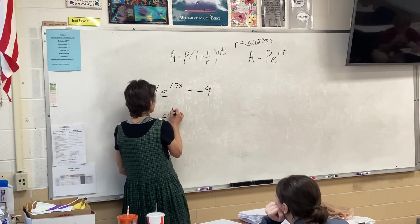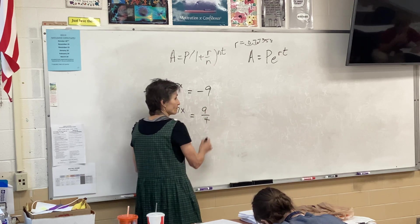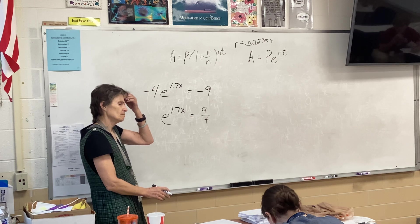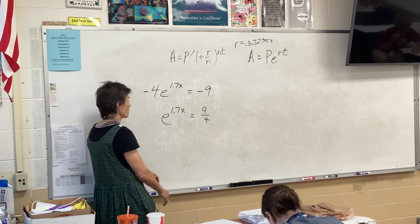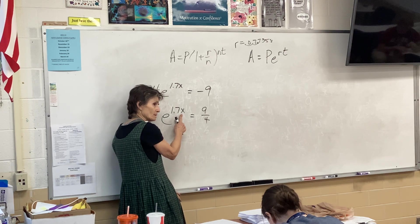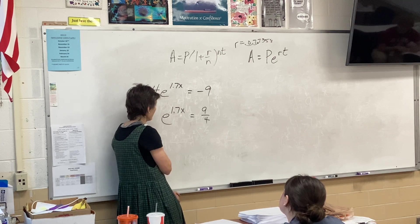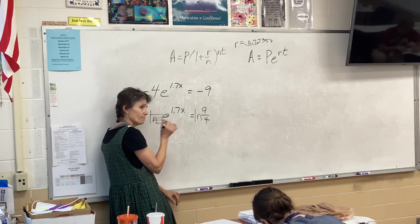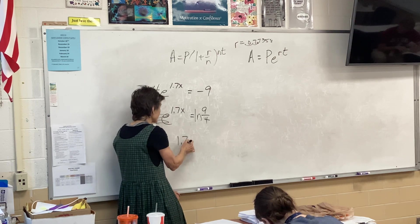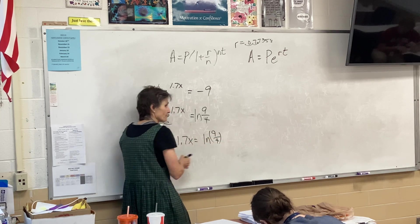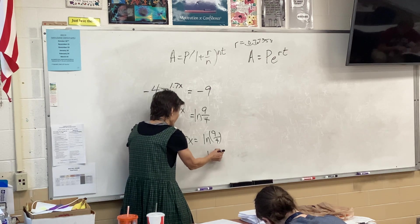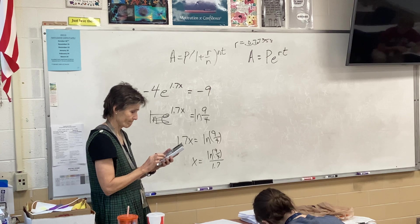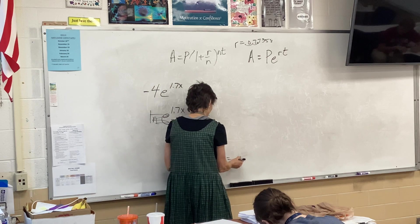Divide by negative 4. So e to the 1.7x ends up equaling 9 fourths. Now remember, this is a calculator problem, so I really don't care about fractions and stuff. What do I do now though? Now I need logarithms. When you are solving for an exponent, you need logarithms. So I'm going to ln both sides because there's an e and I know when an ln and an e touch, they cross out. So 1.7x equals ln 9 fourths. I want x, so I'll do ln 9 fourths divided by 1.7.